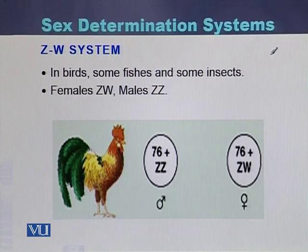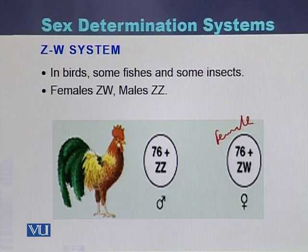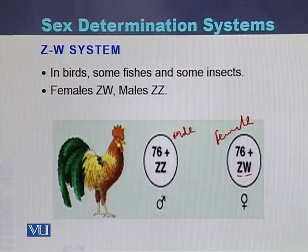In the ZW system, females are heterozygous ZW while males are homozygous ZZ. The female contains two types of sex chromosomes — Z and W — along with 76 autosomes. In case of males there are two Z chromosomes. So males are homogametic while females are heterogametic.